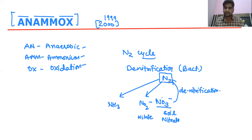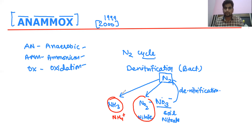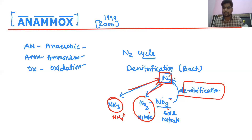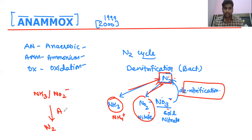Later, scientists discovered that dinitrogen is also formed from nitrite or ammonium ions directly. The conversion of nitrate into dinitrogen is called denitrification, while the direct conversion of nitrite or ammonium ions into dinitrogen (N2) is called Anammox.